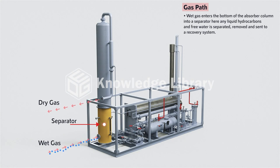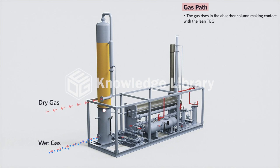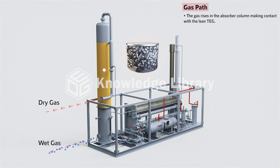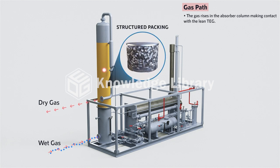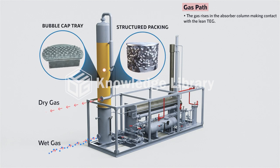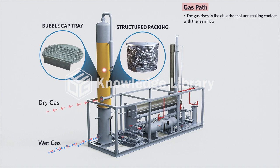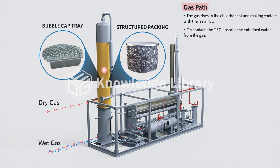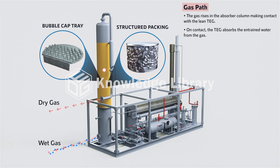Once the liquid hydrocarbons and free water have been separated from the gas, the gas rises in the absorber column making contact with the lean TEG, which is circulated through the column using structured packing or bubble cap trays to ensure contact with the incoming gas is made. On contact, the TEG absorbs the entrained water from the gas.